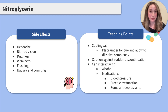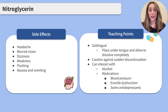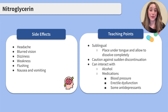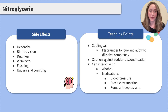Let's move on to teaching points. Nitroglycerin can be administered through a wide variety of methods, with the most common being sublingually or under the tongue. When administering it sublingually, it's important to educate our clients to place it under the tongue and allow it to dissolve completely. We should caution clients against sudden discontinuation and remind them that it can interact with alcohol, antihypertensives, erectile dysfunction medications, and some antidepressants. We also want to hold the medication if the client has low blood pressure, as it could make it worse.